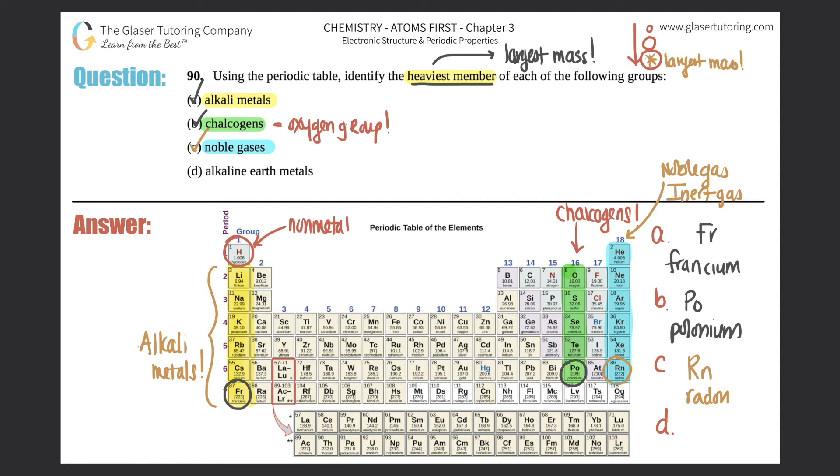Last but not least, where are the alkaline earth metals? The alkaline earth metals are actually group 2, and all of them are part of the alkaline earth metals - from beryllium all the way down to radium.